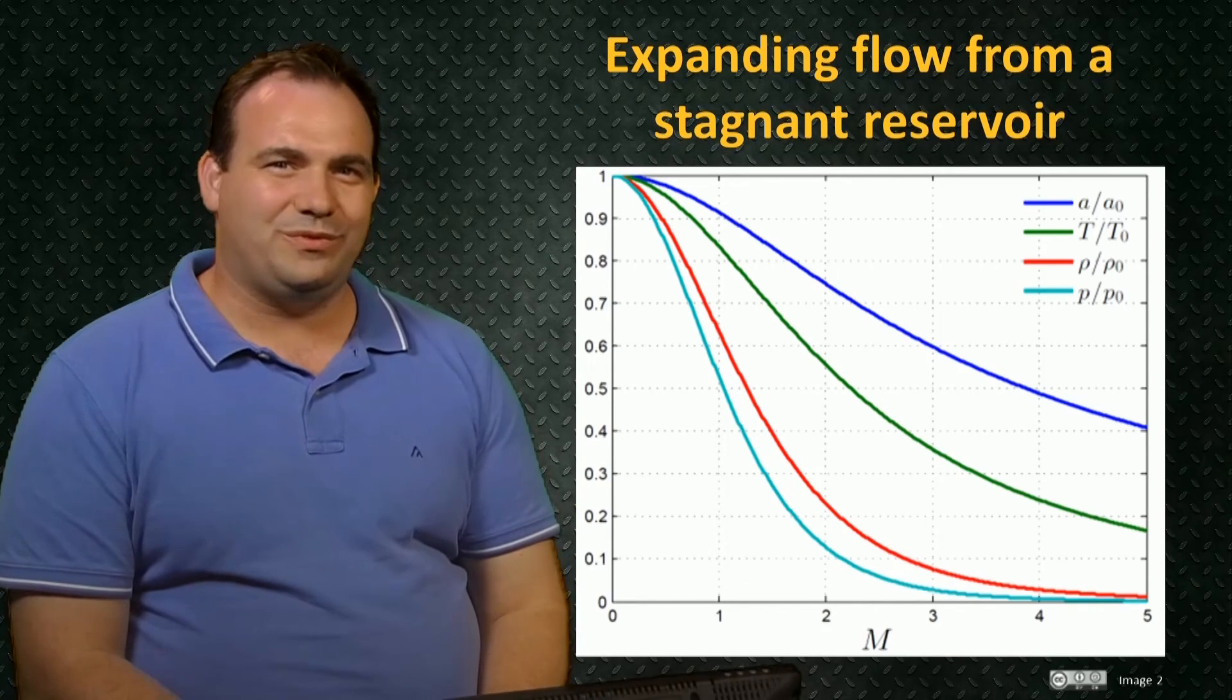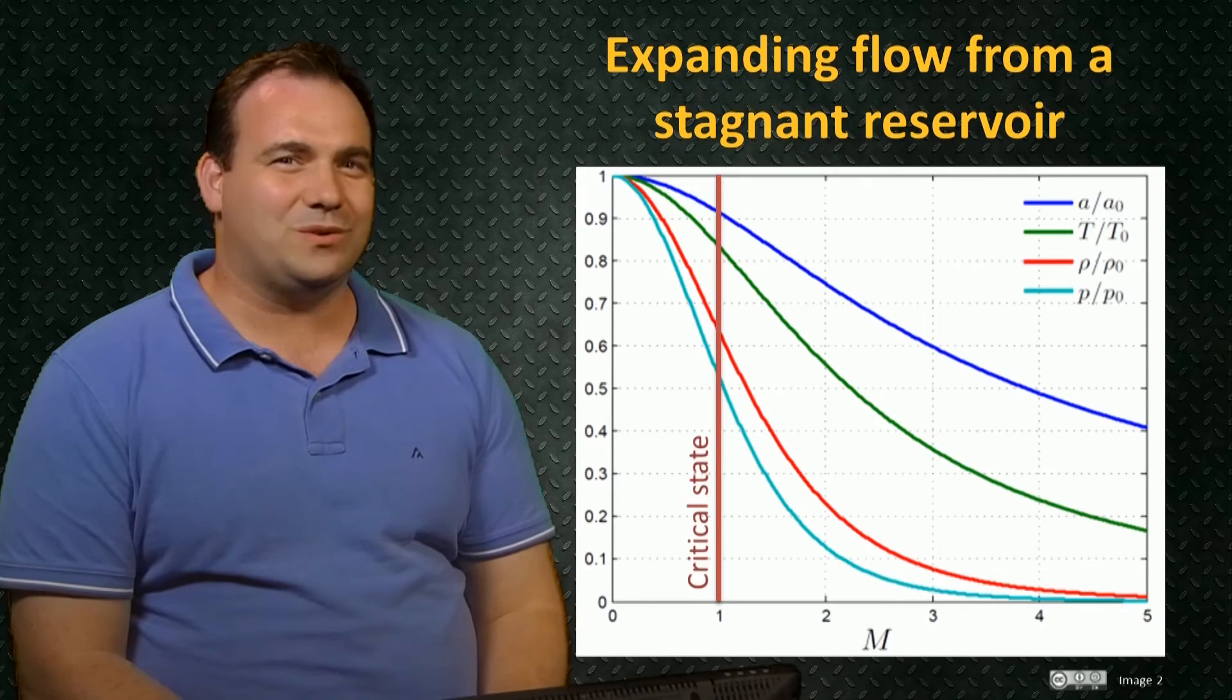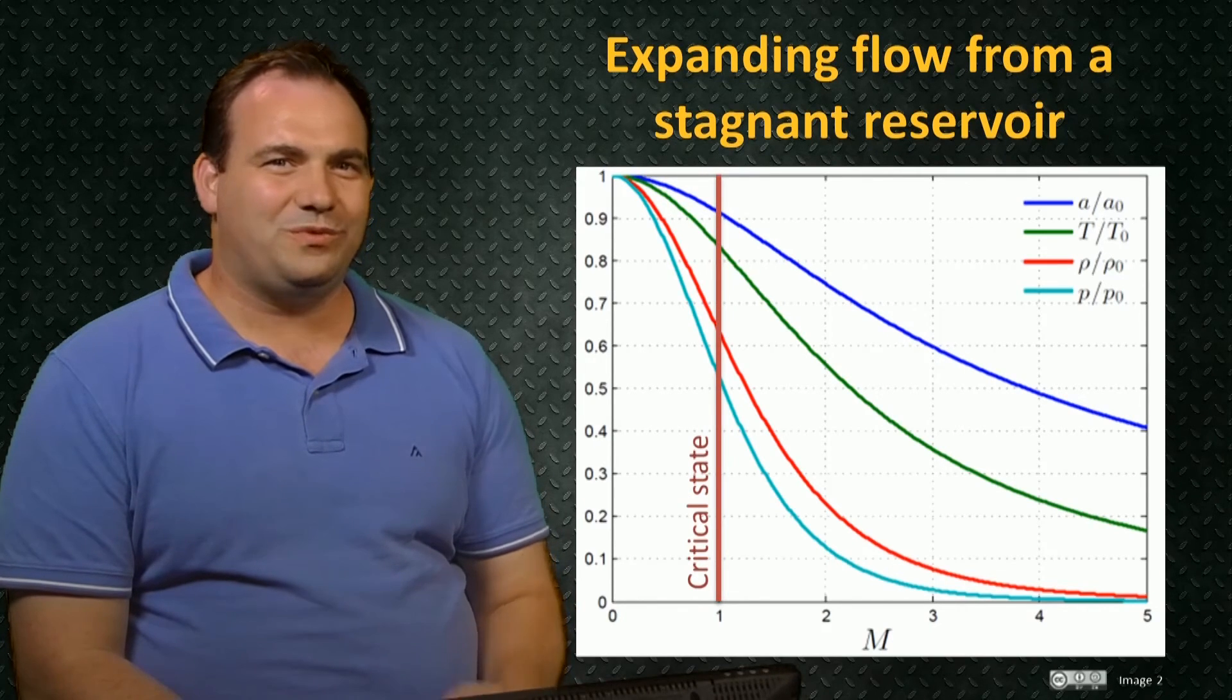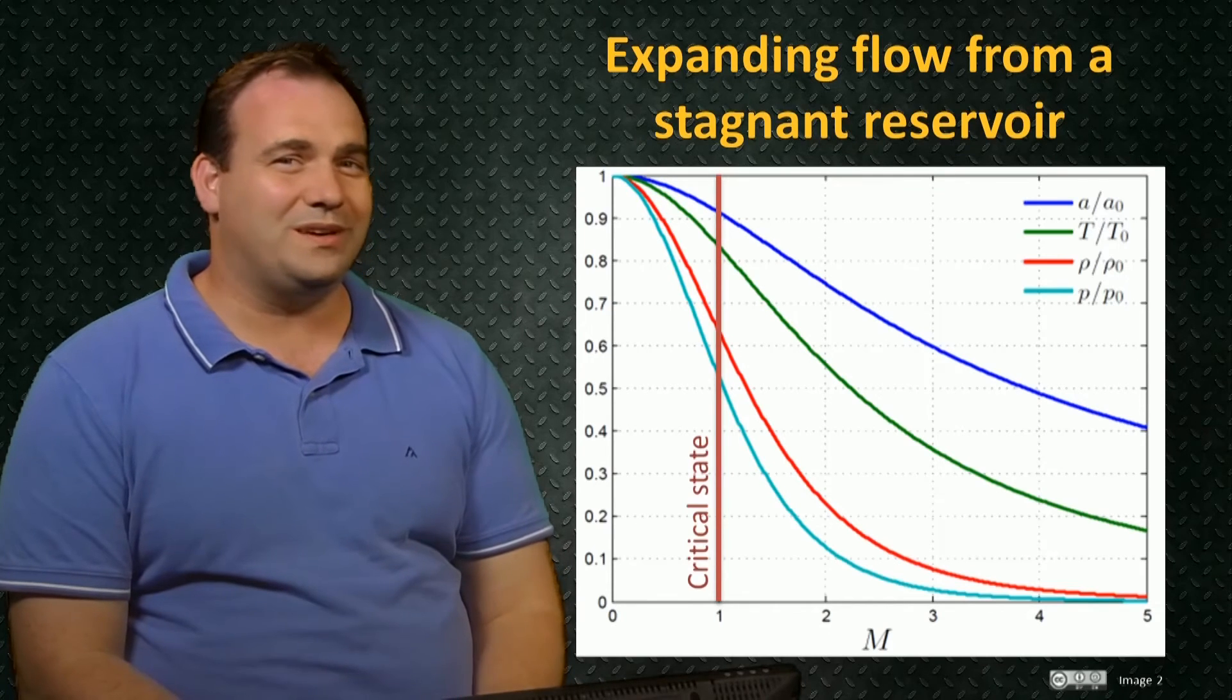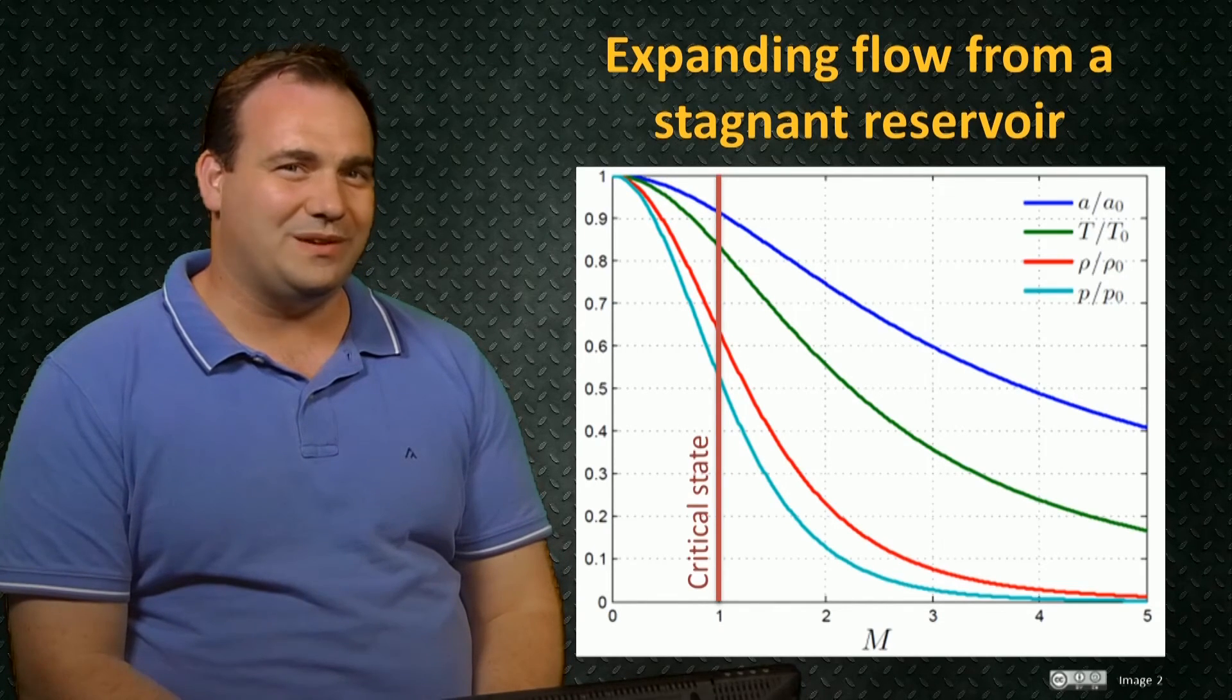The state of the fluid when the Mach number is 1 is known as the critical state. We'll find out in the next subsection that the critical state is very important in the analysis of compressible flows.